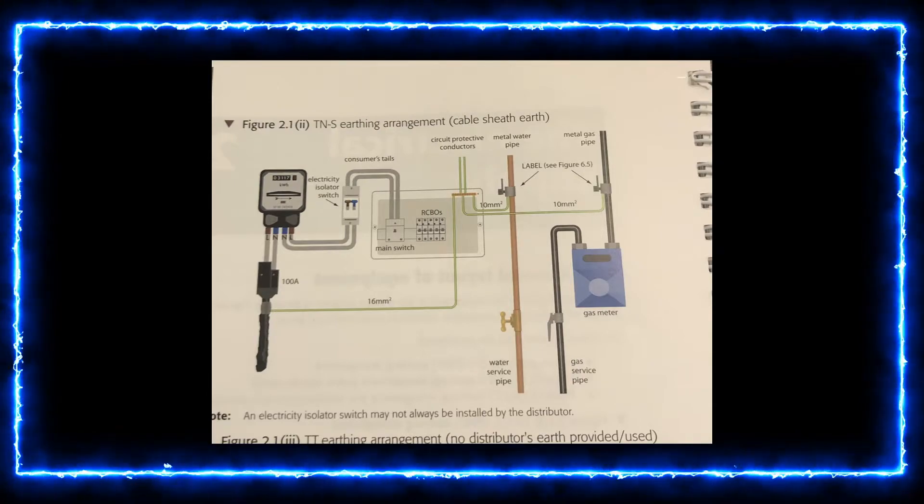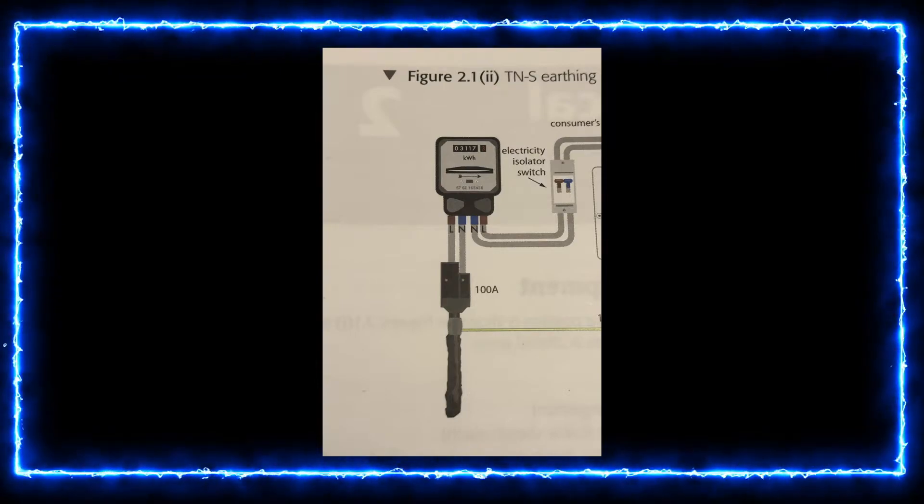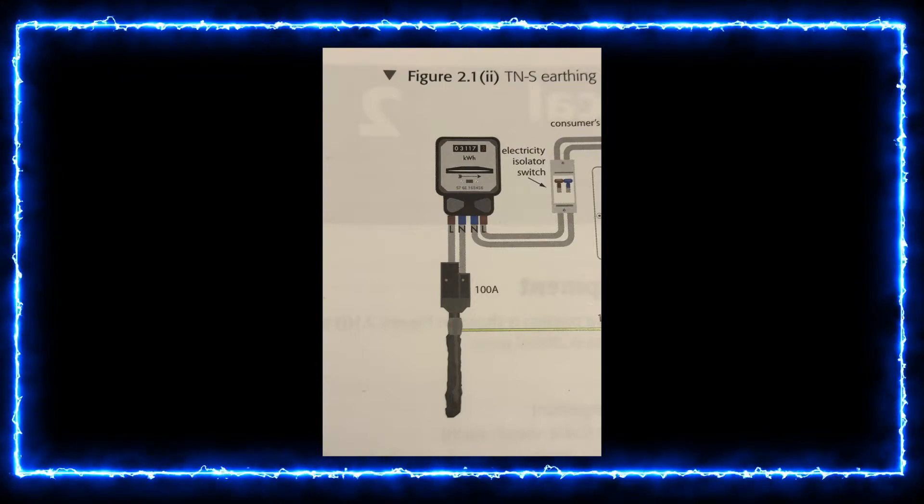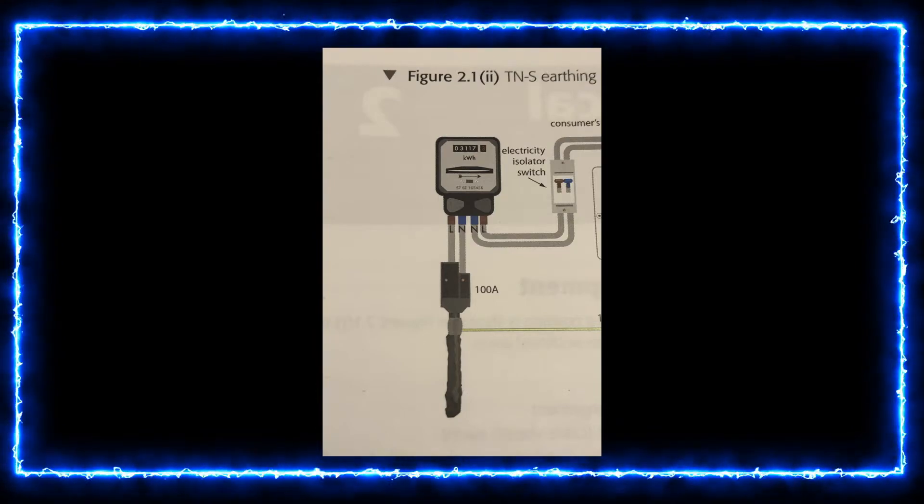On this drawing you'll see that the earth conductor connects directly onto the supply cable, and this is how you'll tell that you're looking at a TNS earthing system.